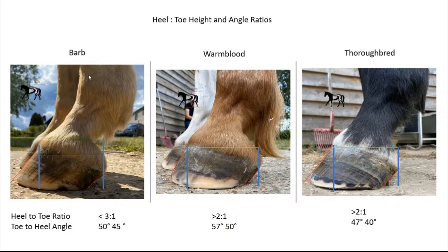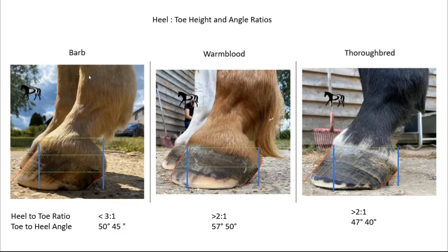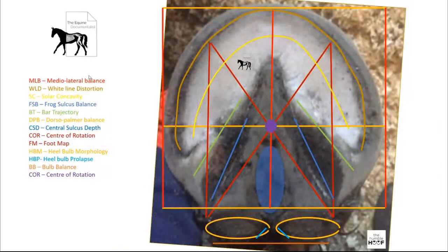The heel-to-toe ratio discussion brings us to the caudal hoof — the frog, bulbs of the heel, digital cushion, and lateral cartilages, which are all part of the hemodynamic system. The health of these structures is directly responsible for creating the ideal proportions of the digit, and therefore the orientation of the limb, and therefore can directly affect posture. This region of the hoof is so often overlooked by farriers and owners alike, yet having healthy caudal hoof structures is one of the most important areas in the whole horse to look after.